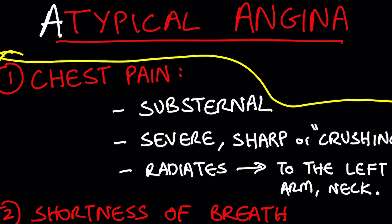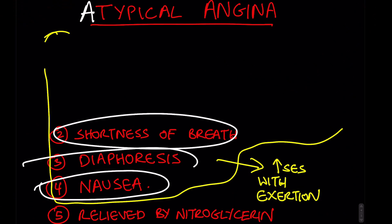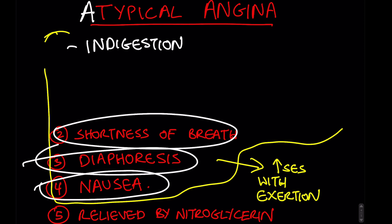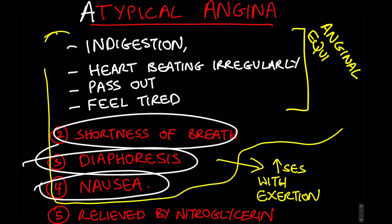To further complicate things, there's also something called atypical angina, where there is no chest pain at all but the patient is having symptoms related to heart disease. These include shortness of breath, nausea, and profuse sweating, but the patient might also have really vague symptoms such as indigestion, a sensation of the heart beating irregularly, passing out, or just feeling tired. These symptoms are also sometimes referred to as anginal equivalents.